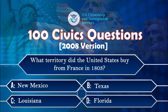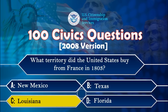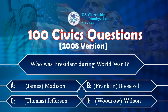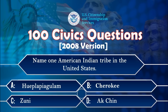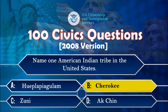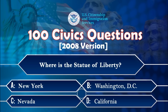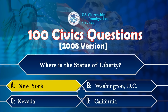What territory did the United States buy from France in 1803? Louisiana. Who was president during World War I? Woodrow Wilson. Name one American Indian tribe in the United States. Cherokee. Where is the Statue of Liberty? New York.